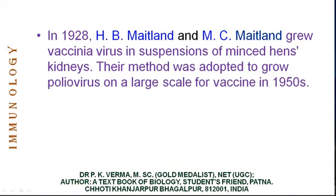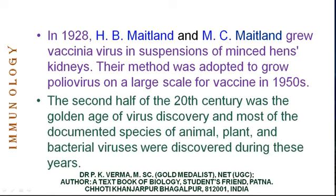In 1928, Maitland and Maitland grew vaccinia virus in a suspension of minced hen's kidney. Their methods were adapted to grow polio virus on a large scale for vaccine preparation in the 1950s. The second half of the 20th century, after the 1950s, was the golden age of virus discovery, and most of the documented species of animal, plant, and bacterial viruses were discovered during this period.